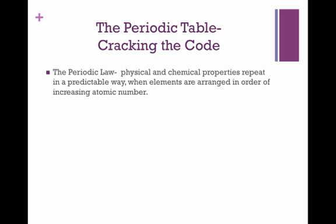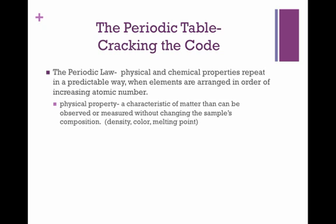Properties of elements can be classified as physical or chemical. As a review, recall that physical properties are those properties that can be measured or observed without changing the sample's composition. For example, that would be density, melting point, or color.